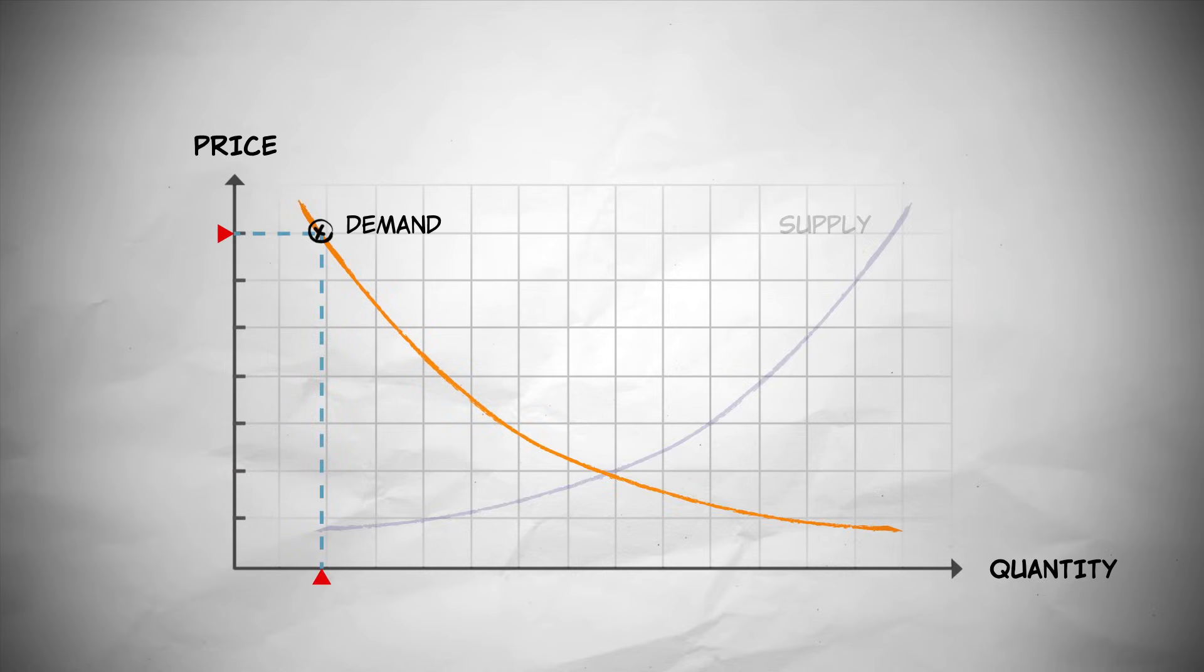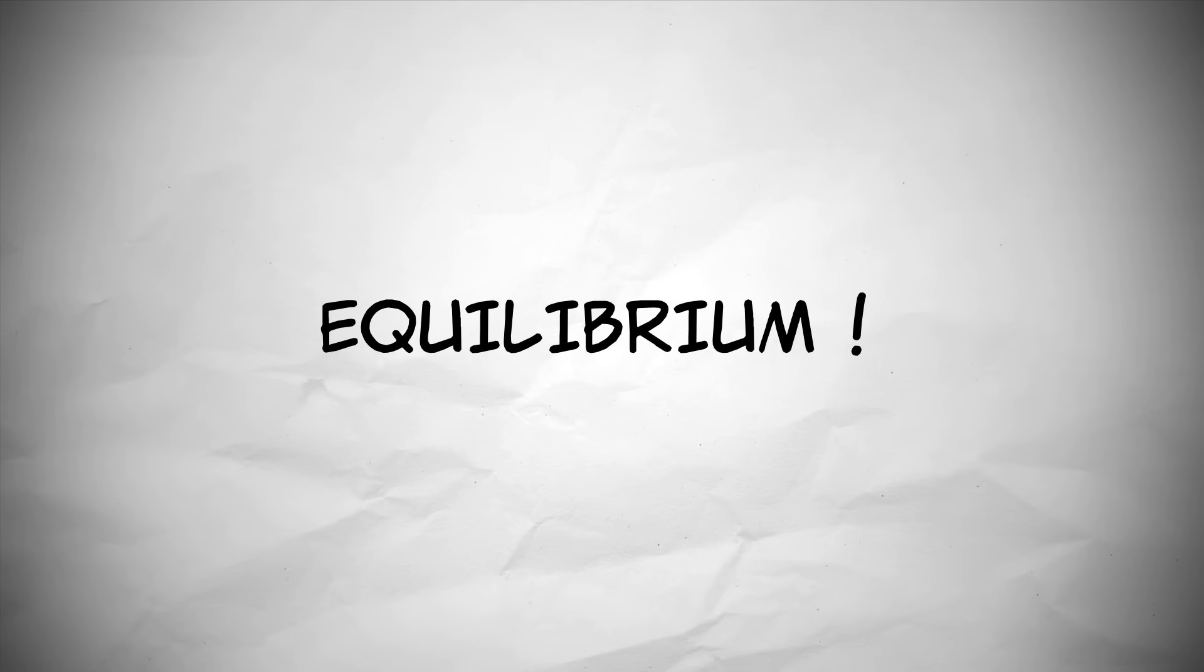So far, we've said things like if the price goes down, buyers will want to buy more, or if the price rises, suppliers will want to sell more. But we haven't said anything about how prices are determined. That's the subject for the next video, Equilibrium.